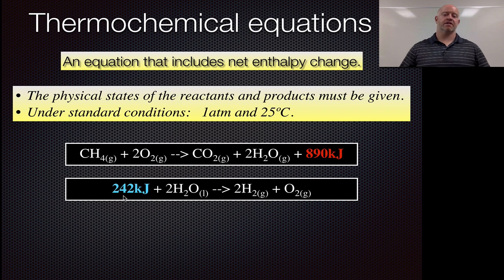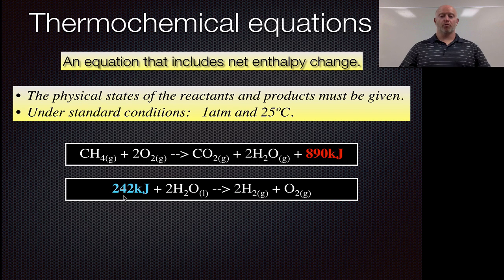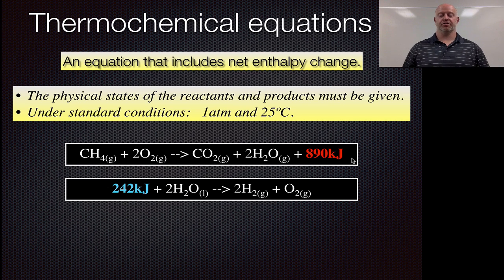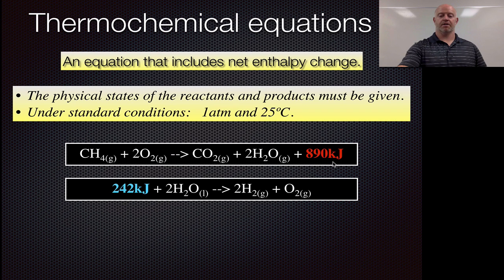So as we go through this process, we can now take our normal chemical equation, and instead of just saying plus energy or energy plus, we actually put numerical values in. And the beauty is this. We can now use this in a stoichiometry problem, where this reaction has a 1 to 2 to 1 to 2 to 890 ratio. So you can treat this the same way as you did these in terms of mole ratios, except it's just kilojoules instead. Same thing down here. It's a 242 to 2 to 2 to 1 ratio.